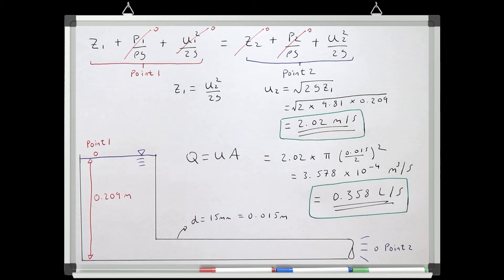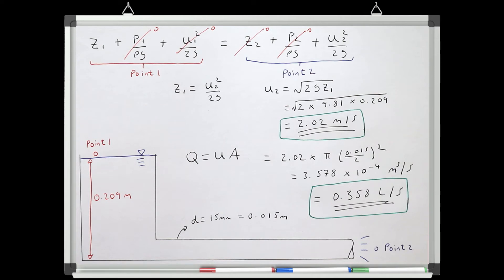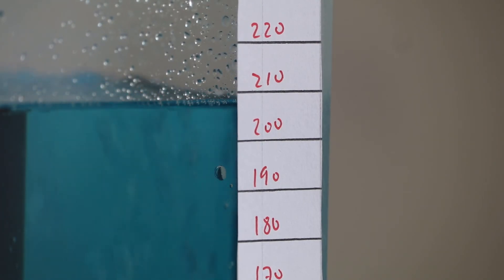Using the assumption of conservation of useful energy really doesn't work well for systems with even moderately long pipes. For a pipe that's just 1.25 meters long, we've predicted a discharge of 0.358 liters per second using Bernoulli's equation assuming conservation of energy, whereas the actual measured discharge is 0.16 liters per second — less than half the predicted value. And this error is only going to get worse the longer we make the pipe.